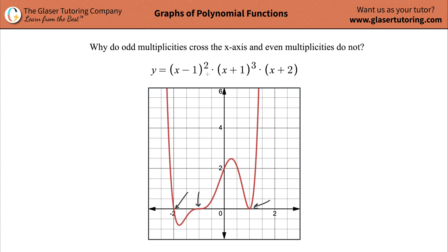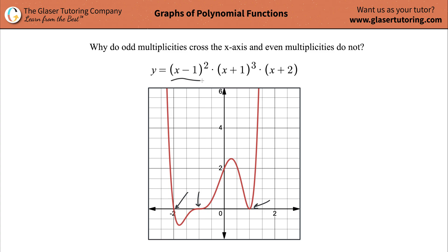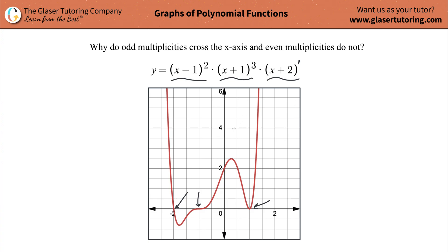Now if you find a correlation between that and the function you're given up here, you'll notice that you have three factors — one factor here, one factor here, and one factor here. This is an even multiplicity because it has an even power. This is an odd multiplicity factor because it has an odd power. And this one, remember, there's a one there and one is odd, so here's another odd value. So there is actually a causational relationship between the multiplicity being odd and crossing the x-axis, and having an even multiplicity and just touching it without crossing.